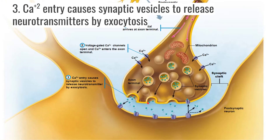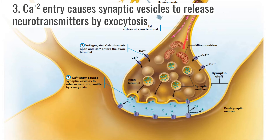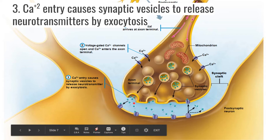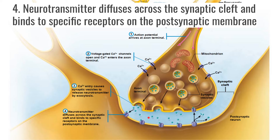That depolarization is the trigger for the vesicles to release their neurotransmitters. So: the action potential arrives, causes calcium to enter, and the entrance of calcium causes the vesicle to secrete its neurotransmitter. The neurotransmitter then moves across the synapse — the synaptic cleft, that fluid-filled cavity — diffuses across, and binds to the receptor. Depending on which neurotransmitter it is and which receptor it binds to, it can have a variety of different effects.